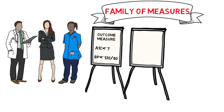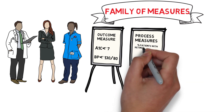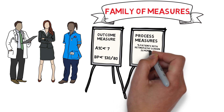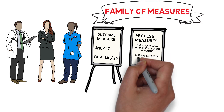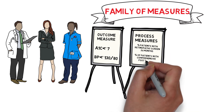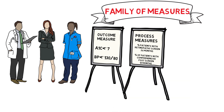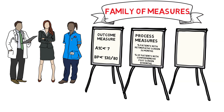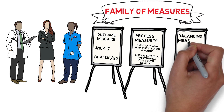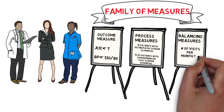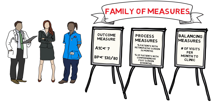Examples of process measures might be the percentage of patients with diabetes who have had a retinopathy screening in the past 24 months, or the percentage of patients with diabetes who have received a comprehensive foot exam in the past 12 months. These reflect processes in the management of chronic disease. The balancing measure might be the number of visits a patient makes to the clinic per month, which is important to examine because the unintended consequence of doing more tests would be more visits, which could be inconvenient to the patient.